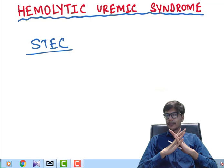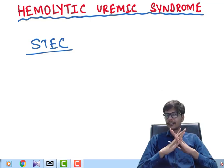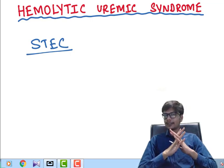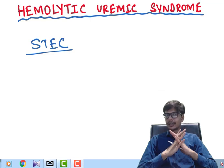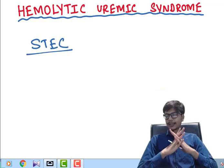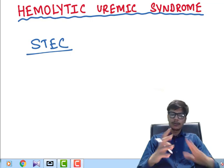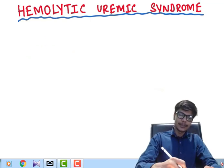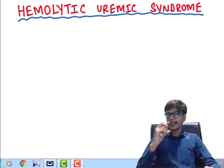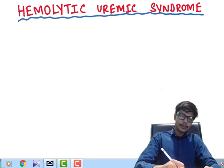But when it infects human beings, the mortality is very high because it causes a deadly syndrome known as Hemolytic Uremic Syndrome (HUS). This syndrome is characterized by a triad of laboratory findings — not clinical findings, but laboratory findings. Let us first discuss what this triad is, and then we will discuss the other possible causes which can also lead to HUS. As the name suggests, there is hemolysis occurring in the patient.